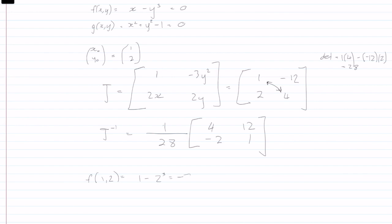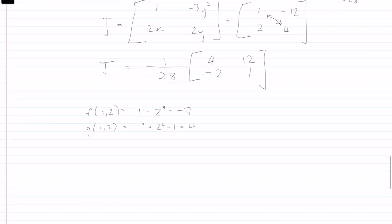And g of one, two is equal to one squared plus two squared minus one, which is equal to four.